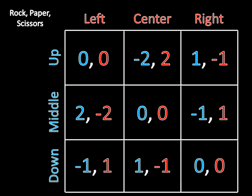We can do this just as we've done in the past with the regular mixed strategy algorithm. We're going to solve for this by finding player one's expected utilities as a function of that mixed strategy. So let's start out doing this now. Here again is the game. We're going to find player one's expected utility for up, for middle, and for down, all as a function of player two's mixed strategy. Then all of those expected utilities are going to be equal to one another, and we can use that to solve for sigma-left and sigma-center.